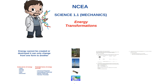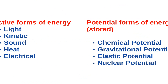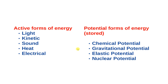Let's start with a quick recap. Here are different types of energy. The active forms of energy are: light, kinetic, sound, heat, and electrical. Light energy is technically a form of electromagnetic radiation. Kinetic energy is the energy of any moving object. Sound is technically a type of kinetic energy — it's the vibration of particles through the air. Heat is also technically kinetic energy because when you heat a substance the particles start to move faster. Electrical energy is the flow of electrons and powers all our electrical devices.